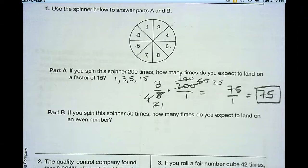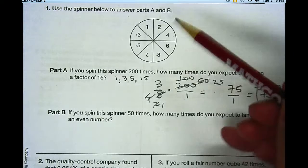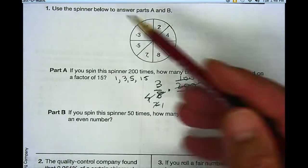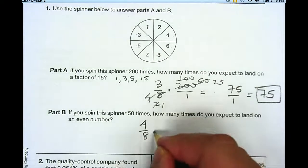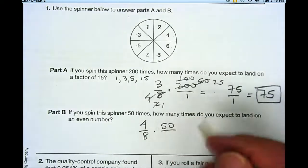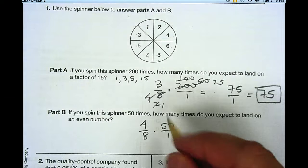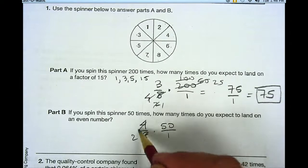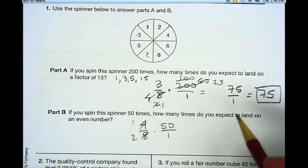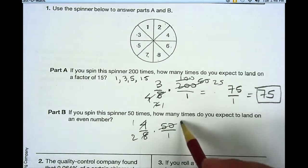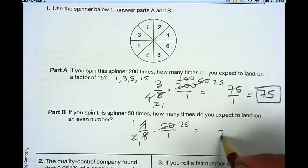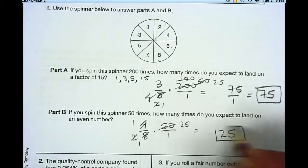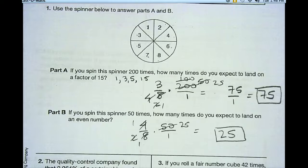If you spin the spinner 50 times, how many times do you expect to land on an even number? Well, there's four even numbers, 2, 4, 6, 8 out of 8. So I have 4/8 chance to get an even number. And if I multiply that by 50, it's really 1 half times 50, because I can reduce this to 1 half. And if I can reduce this again, 50 divided by 2 is 25, 2 divided by 2 is 1. So I really should expect it half the time, or 25 times, to get an even number for Part B.